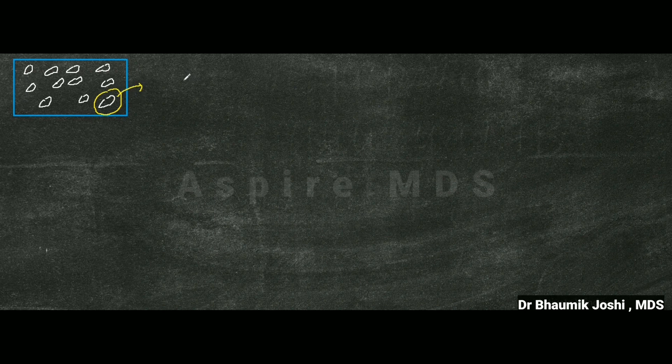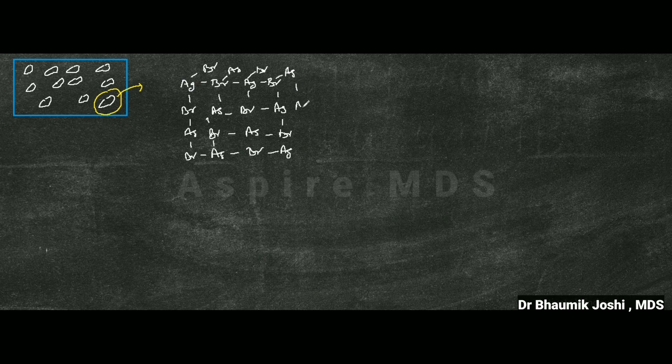If you see the structure of a single grain, you will see presence of silver bromide arranged in a three-dimensional lattice configuration.